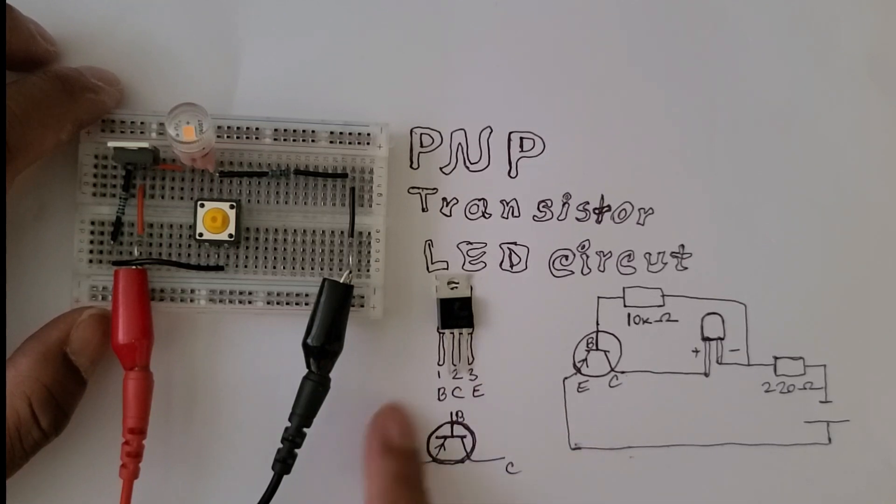In the circuit symbol, the base is the middle one, emitter is the left side one, and collector is the right side one.